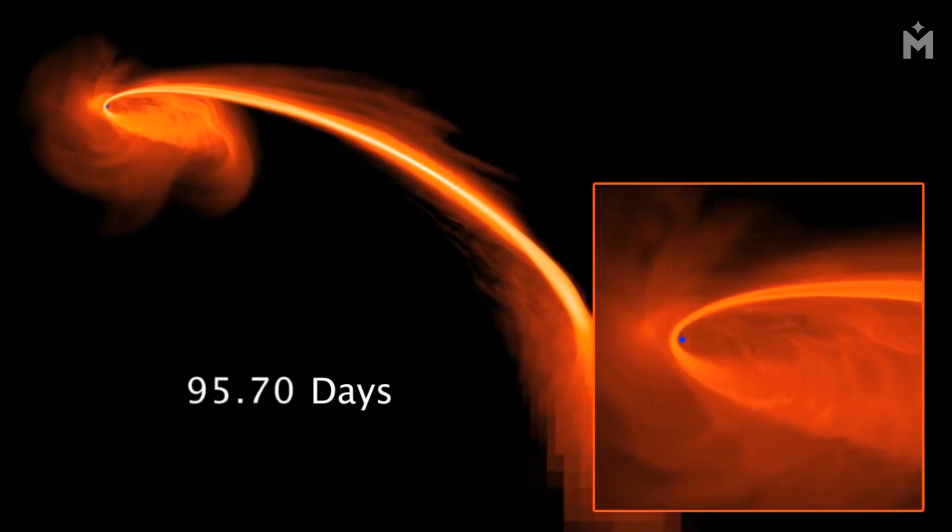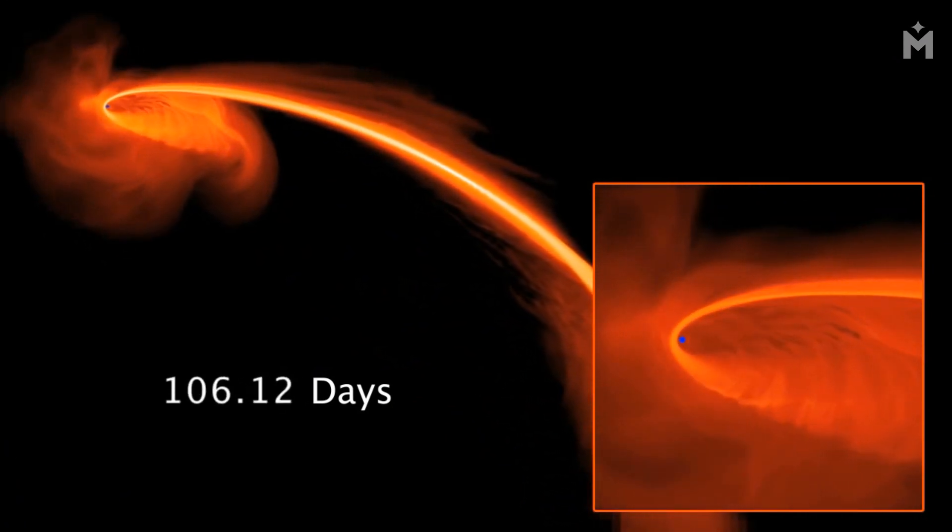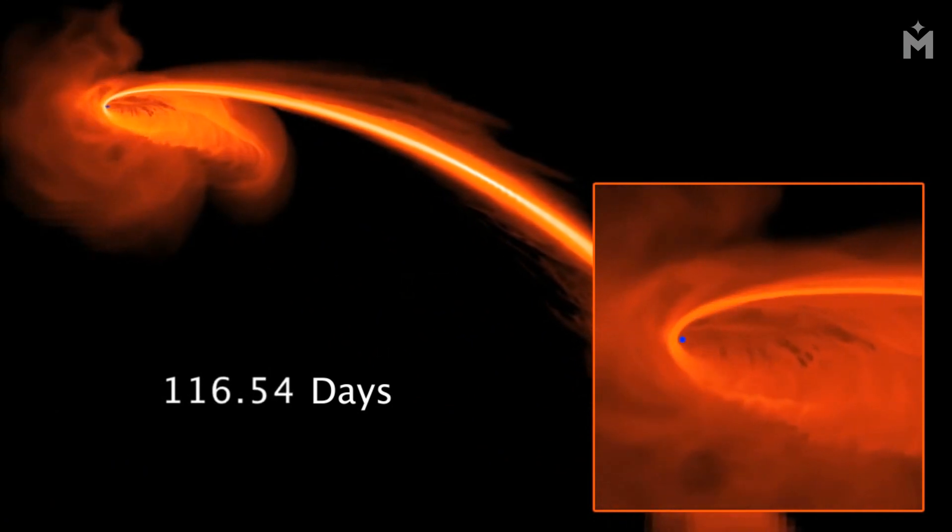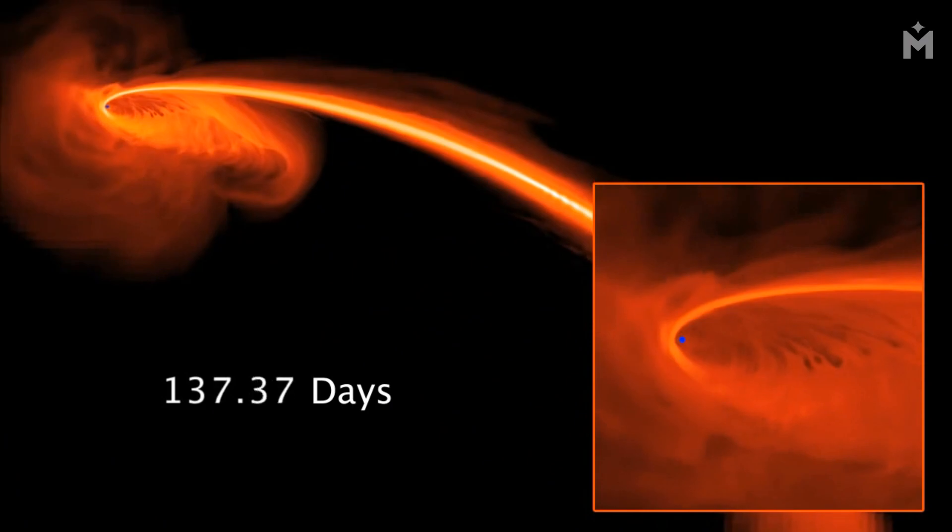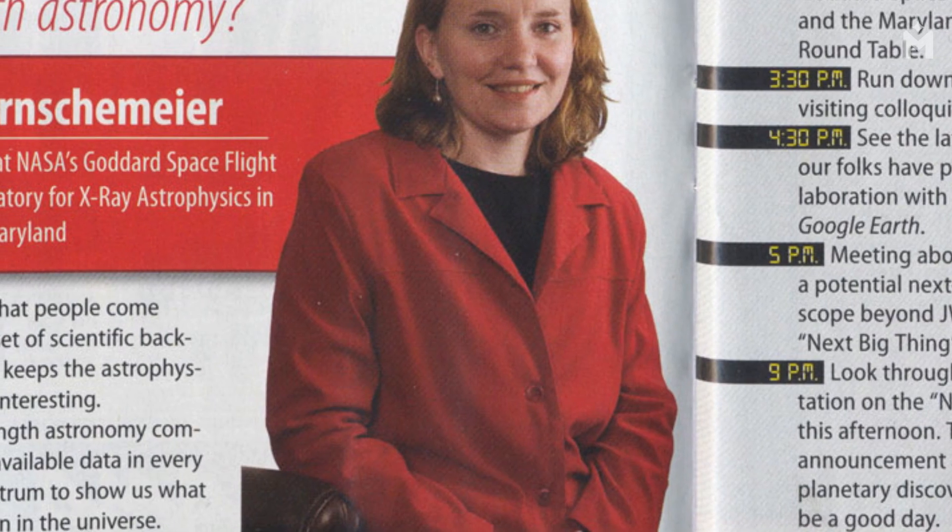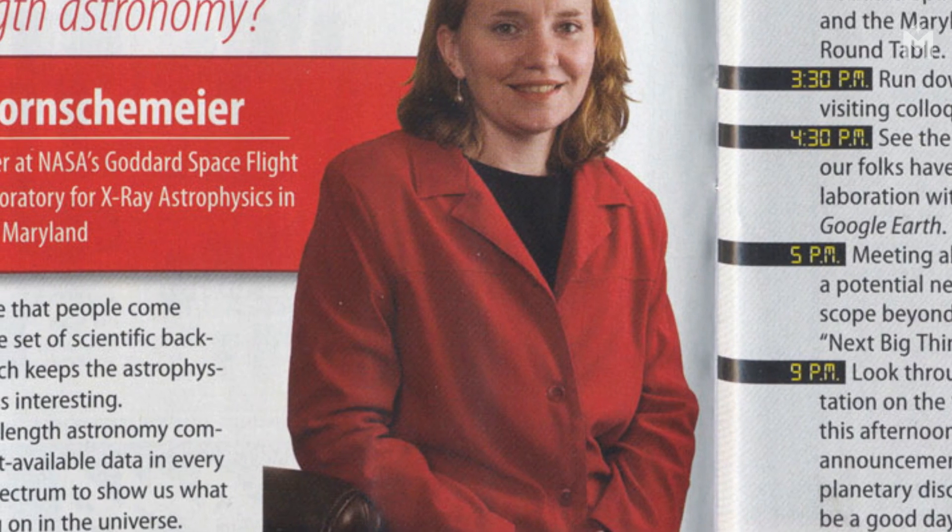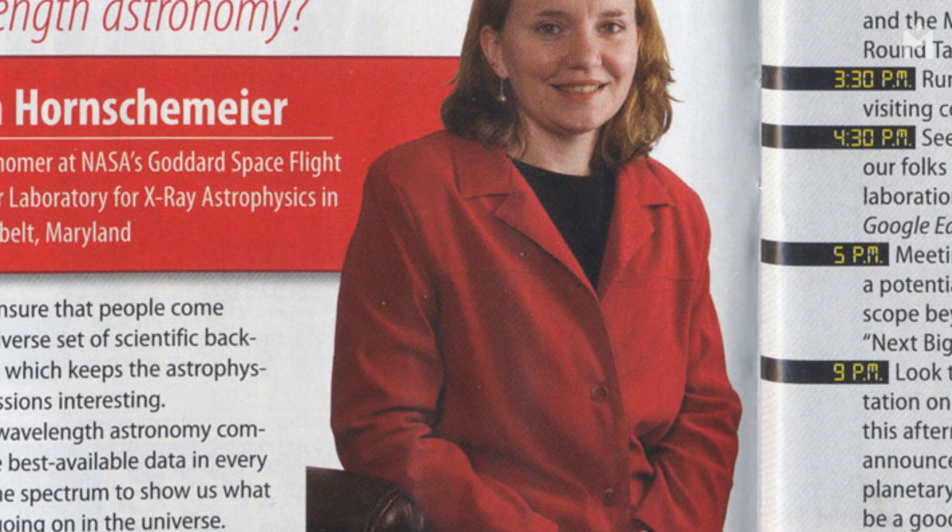This interaction between a star and a black hole is called a tidal disruption event, and it's thought to be how supermassive black holes grow. If we can detect and characterize these supermassive black holes, we can better understand how the black holes grew, and how that growth affected the galaxies around them.